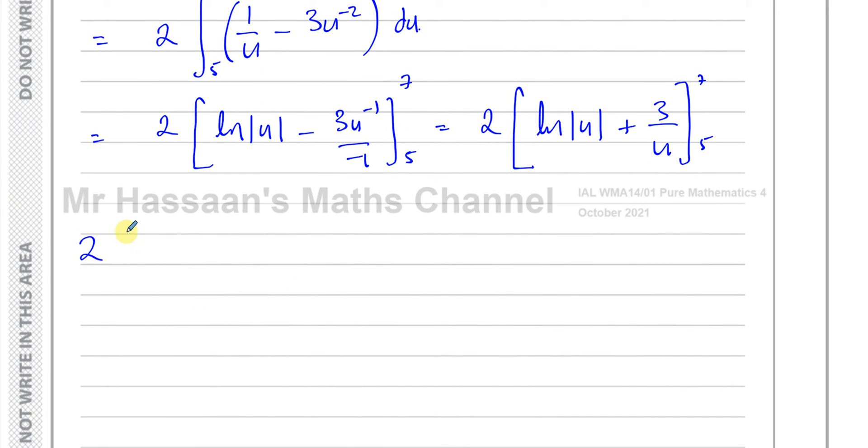So far it's looking just right. So you have ln|7|, which I don't have to put modulus now because it's a positive number. So I can just put ln 7. ln 7 + 3/7 minus, I'm going to put 5 in here. That will be ln 5 + 3/5. So we have 2 times, and that's going to be ln 7 - ln 5, which is ln(7/5). And you've got 3/7 - 3/5, plus 3/7 take away 3/5.